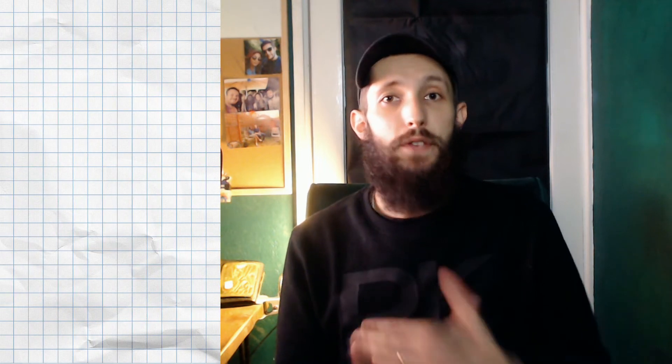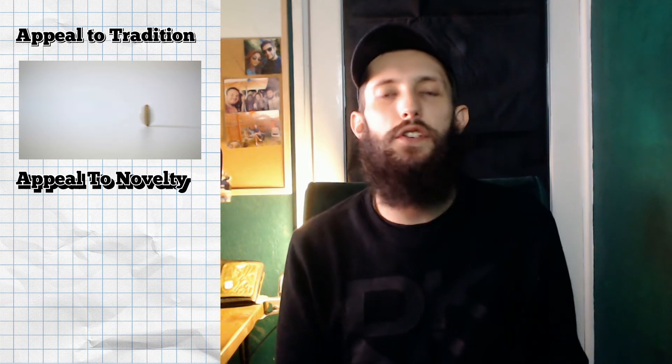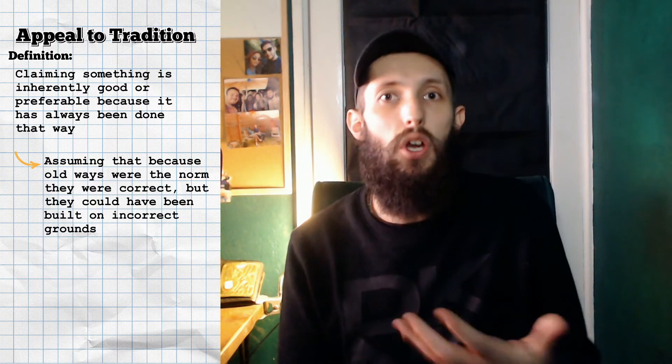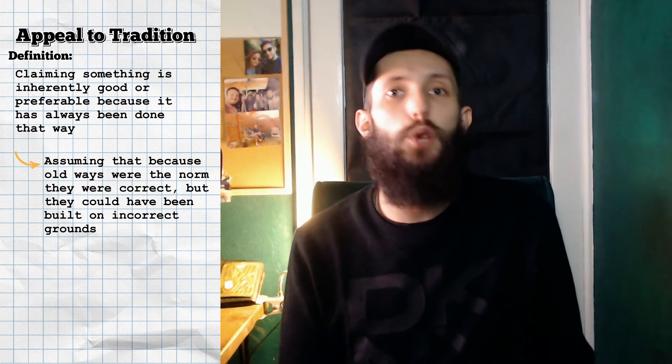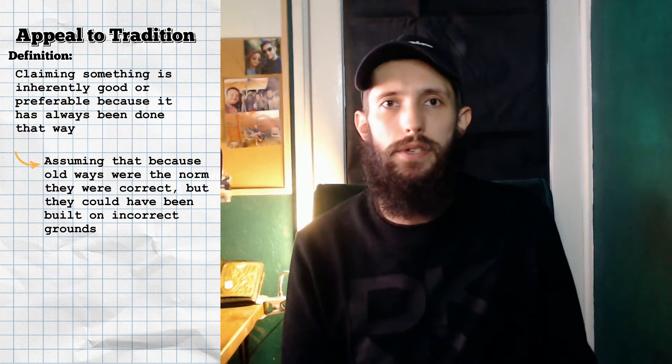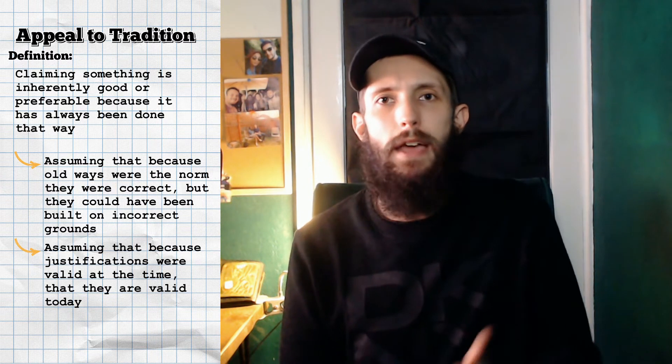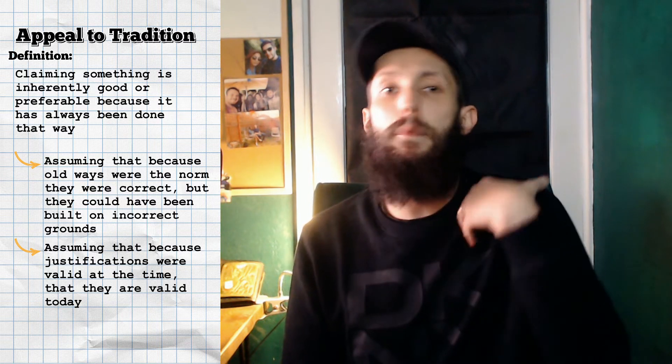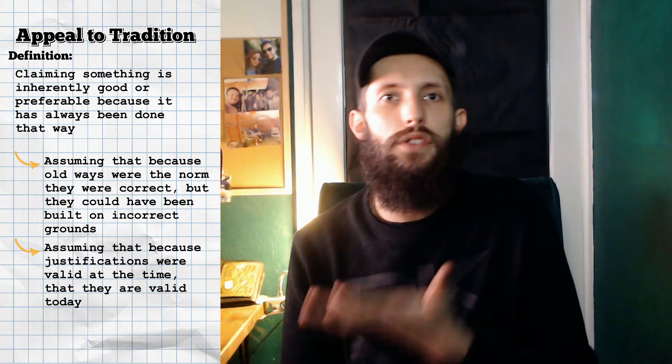This section comes with two fallacies for the price of one: an appeal to tradition and an appeal to novelty, which are two sides of the same coin. An appeal to tradition is at its core the argument that 'this is right because we've always done it this way.' This is built on two assumptions that are not necessarily true: firstly, that the old ways of thinking were correct despite the real possibility the tradition was established on incorrect grounds; and secondly, that those justifications must still be valid today even if circumstances have changed and rendered them invalid.